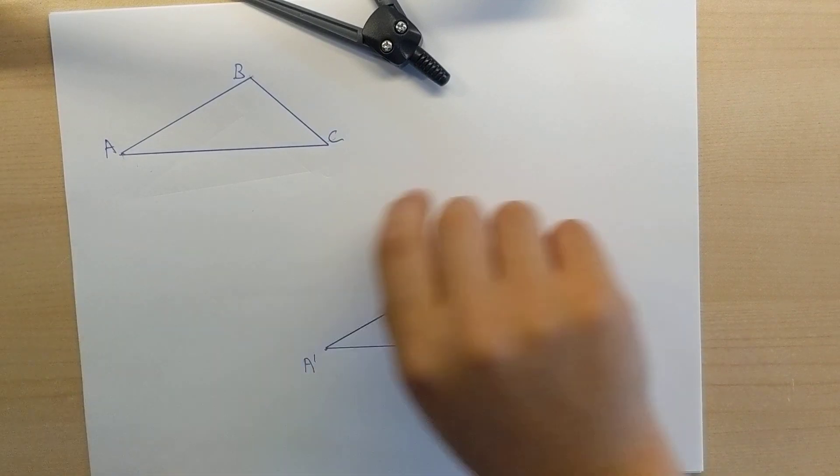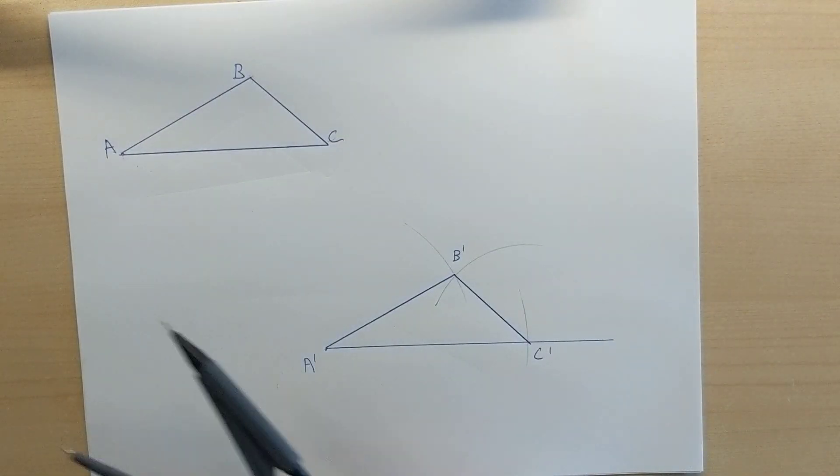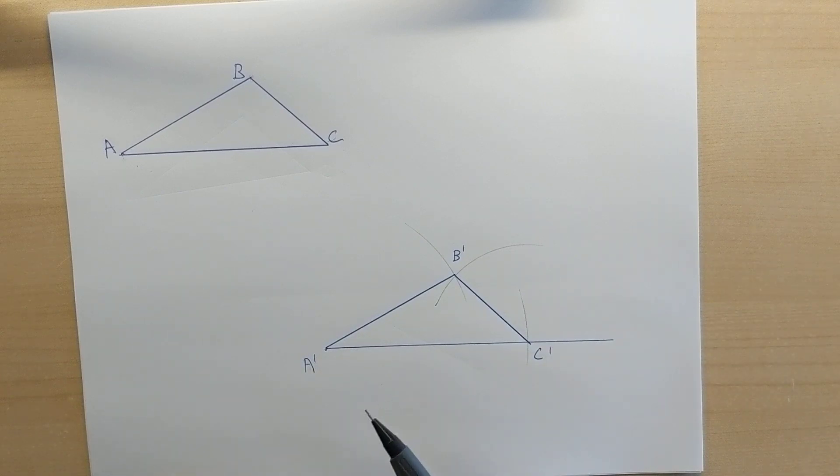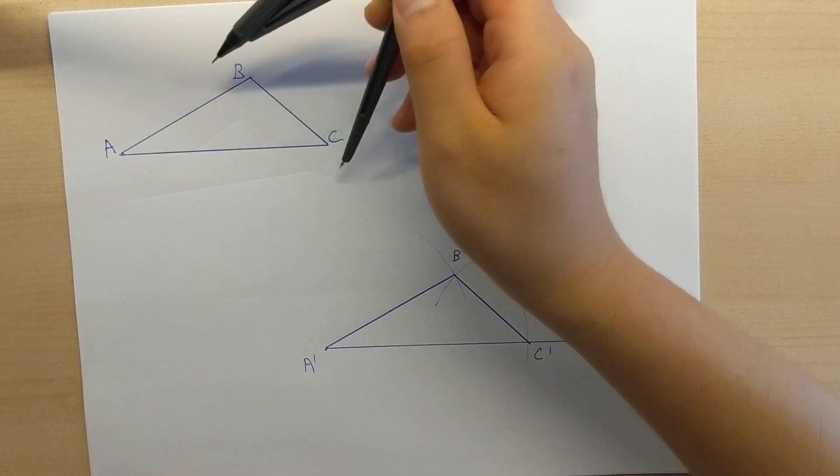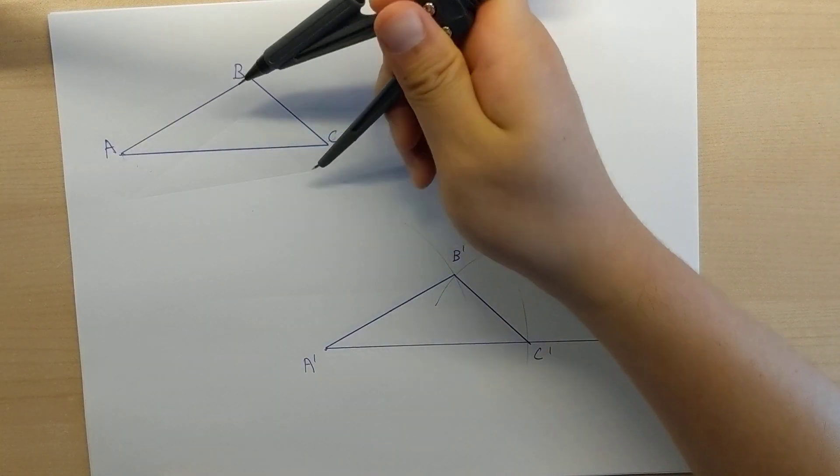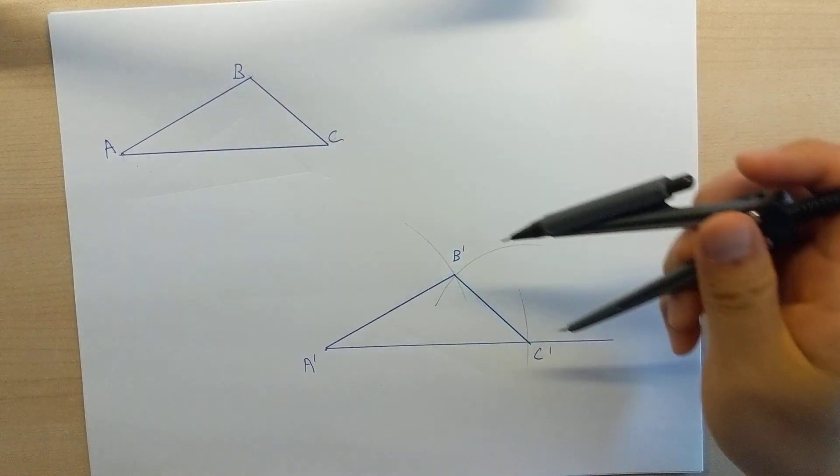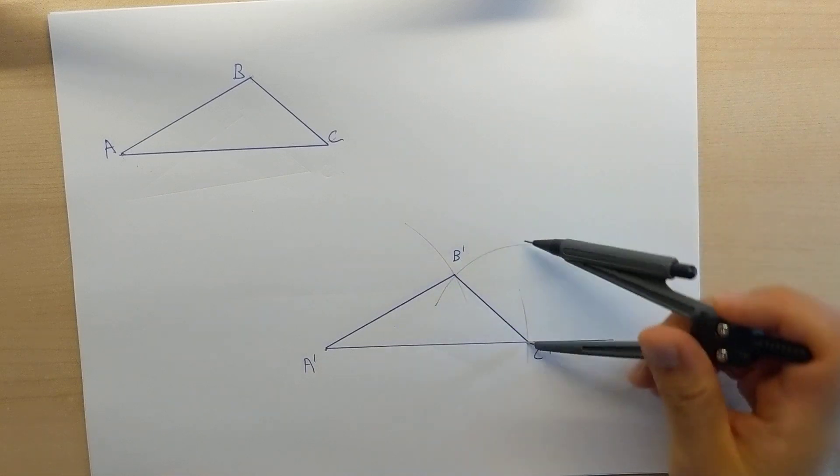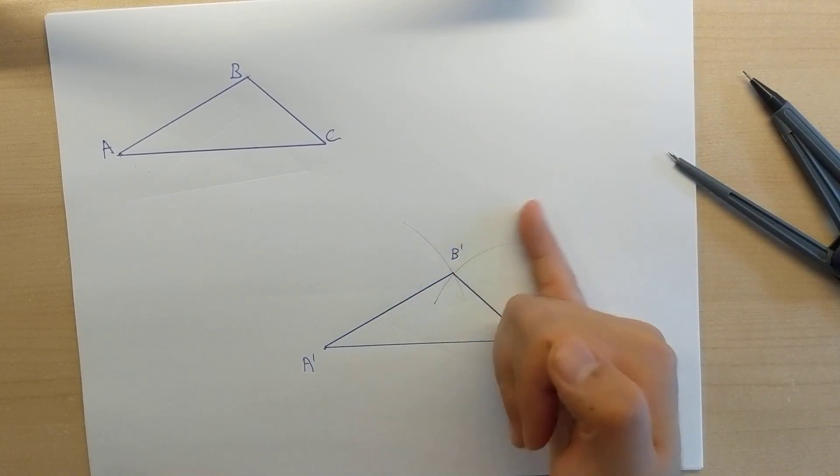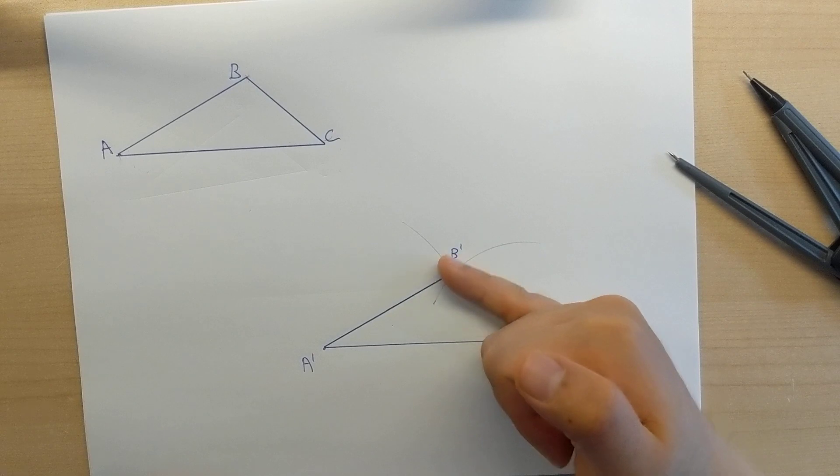So, once again, to summarize, we first copy one line segment. Second step, after we copy that one line segment, we copy the length of the second line segment. We draw an arc. But we have no idea at what angle to place that line at.